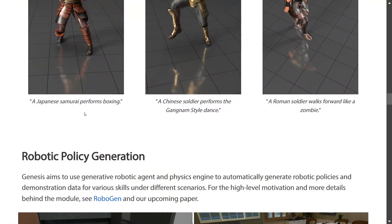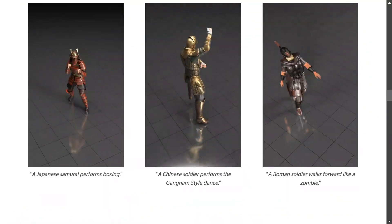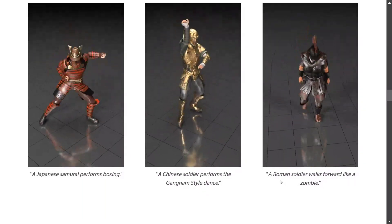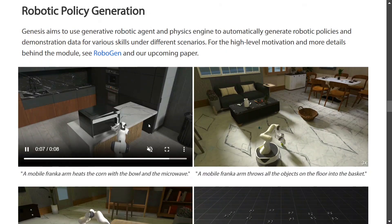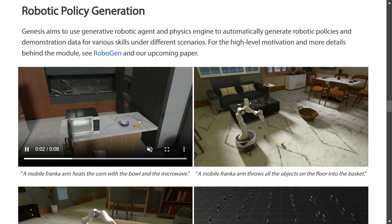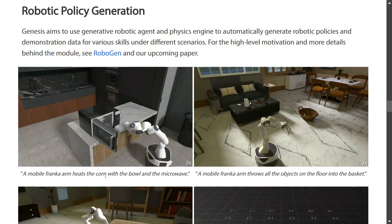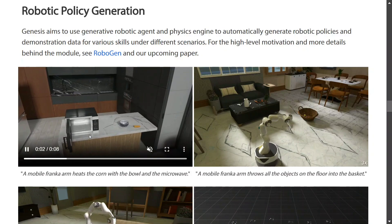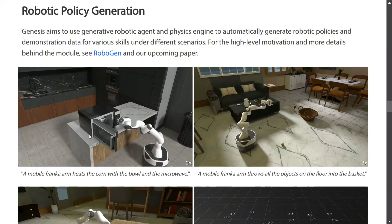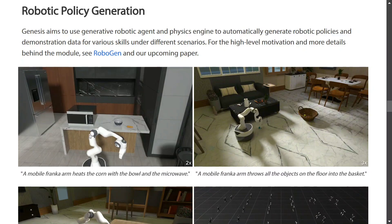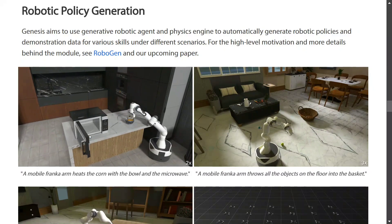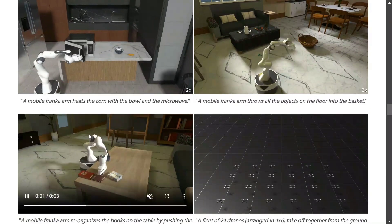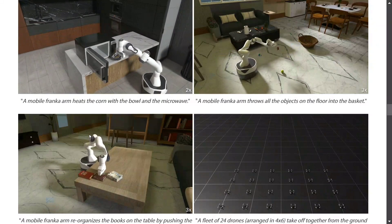There are more examples the team has shared: a Japanese samurai performing boxing, a Chinese soldier performing the Gangnam Style dance, a Roman soldier walking forward like a zombie. Now here comes the robotic part — a mobile Franka arm heats corn in a bowl in the microwave. The movement of the arm is very important; it should not look irregular, which happens quite often with text-to-video models. If you've used Sora released recently by OpenAI, it had a lot of glitches. But in this case all the robotic arms are working perfectly fine and nothing looks AI generated — you can't tell it's a fake video.